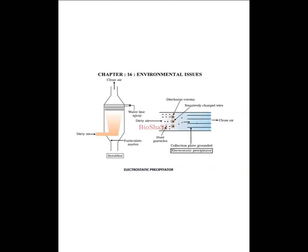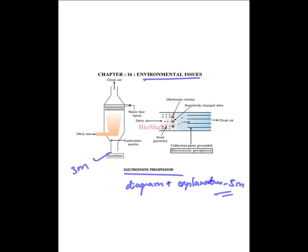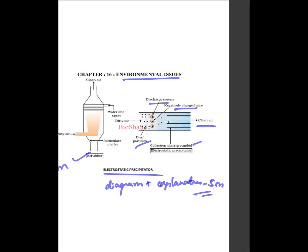From the last chapter, Environmental Issues: the electrostatic precipitator and the scrubber — the scrubber can be asked for three marks, or 'explain the electrostatic precipitator with a neat labelled diagram' for five marks — diagram plus explanation. You have to show the discharge corona, negatively charged wire, clean air, collection plate, and dust particles. This is the electrostatic precipitator.